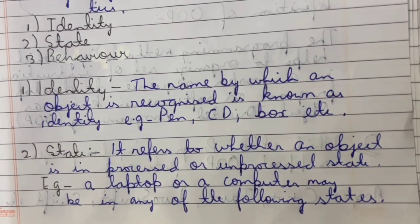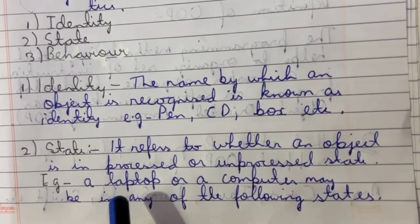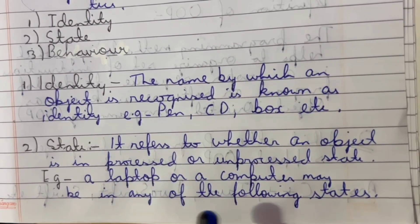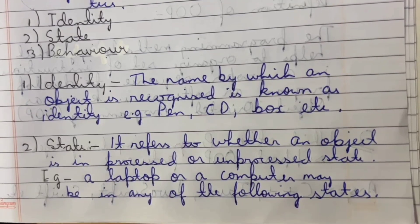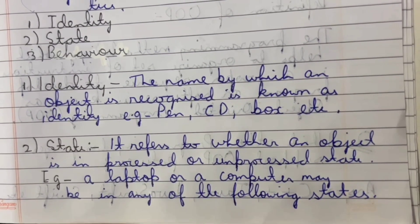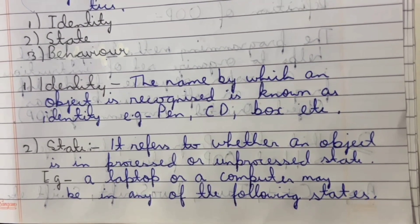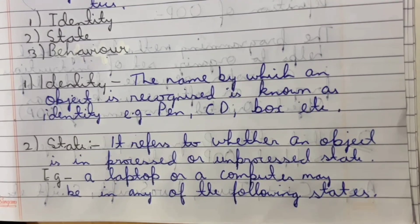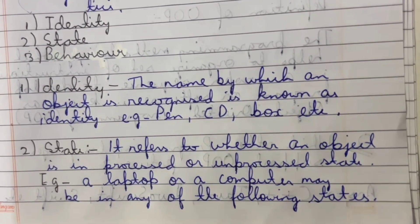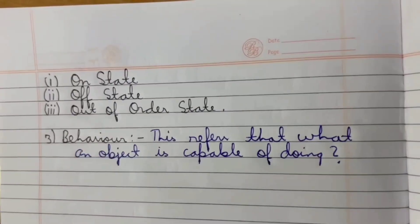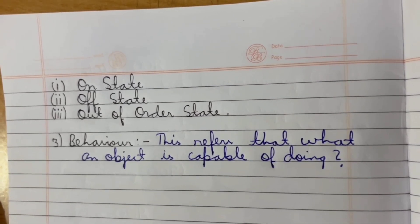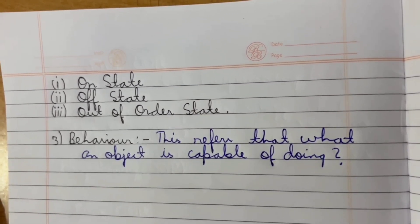State refers to whether an object is in a processed or unprocessed state. For example, a laptop or computer may be in any of the following states. The identity is the computer, and the state is whether the computer is in on state, off state, or out of order state.